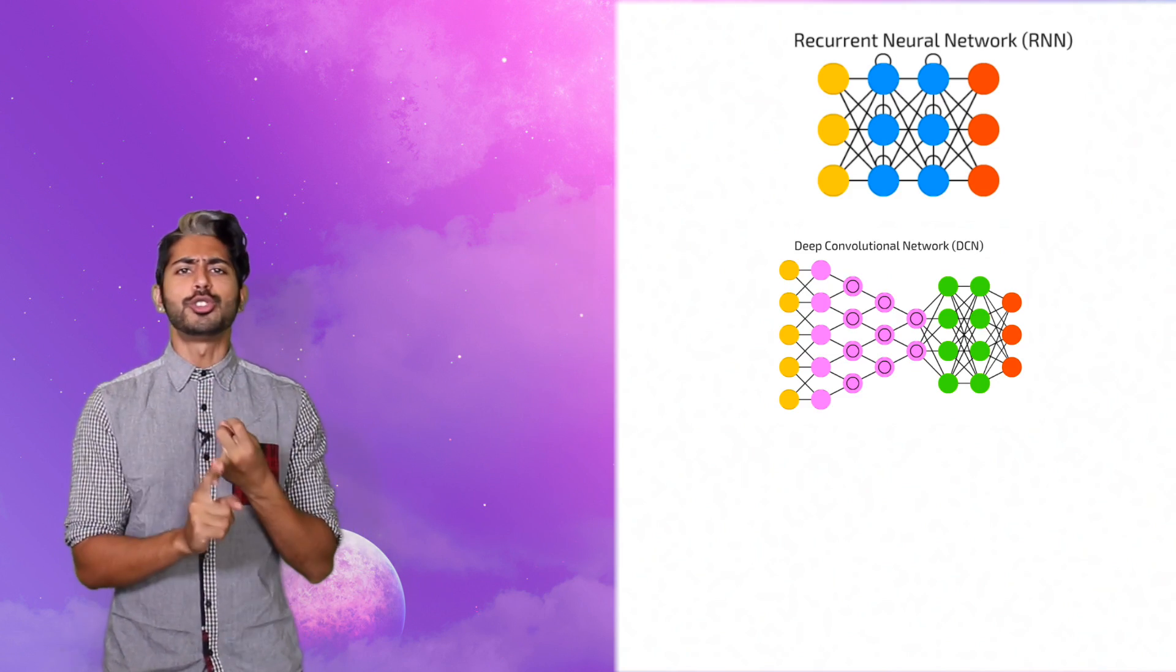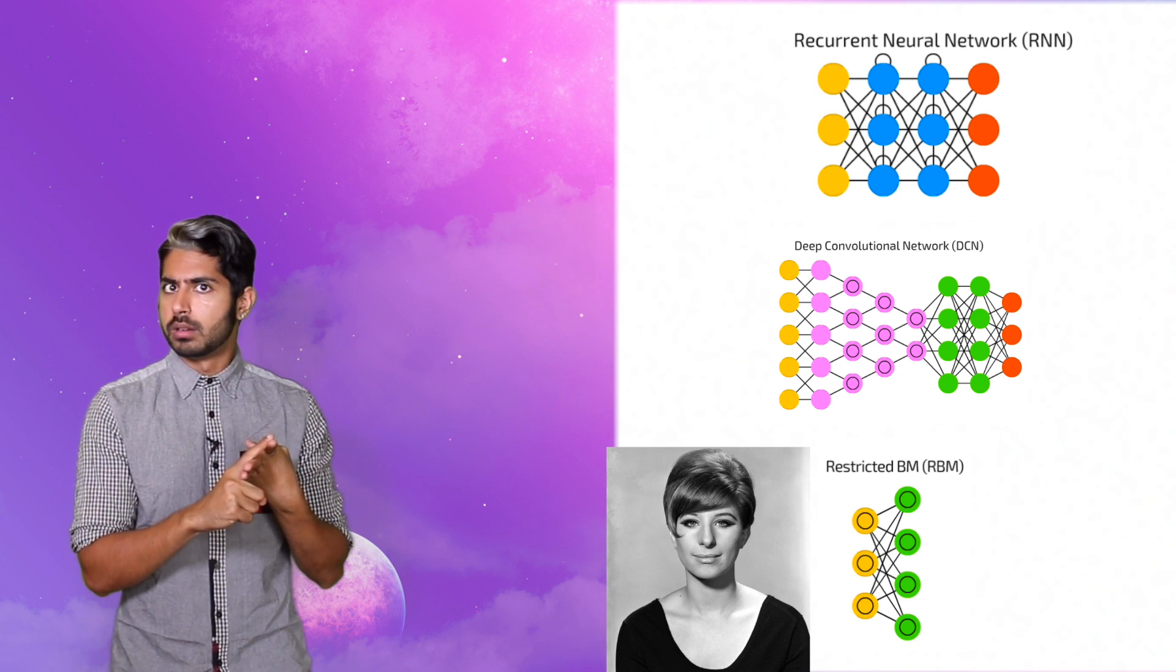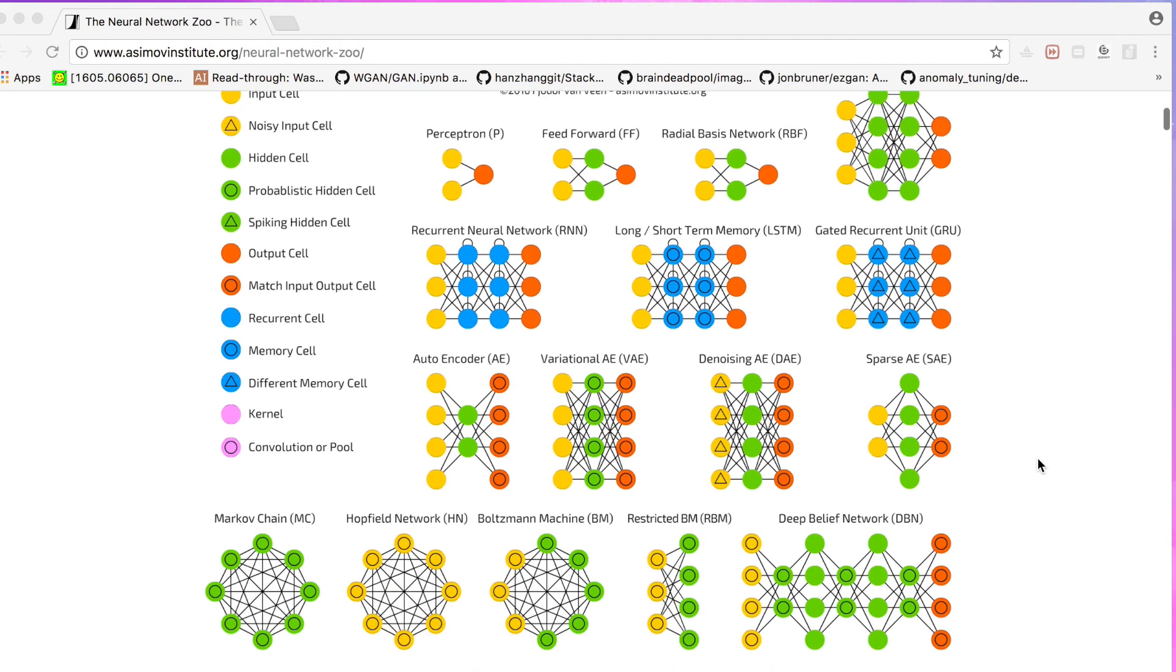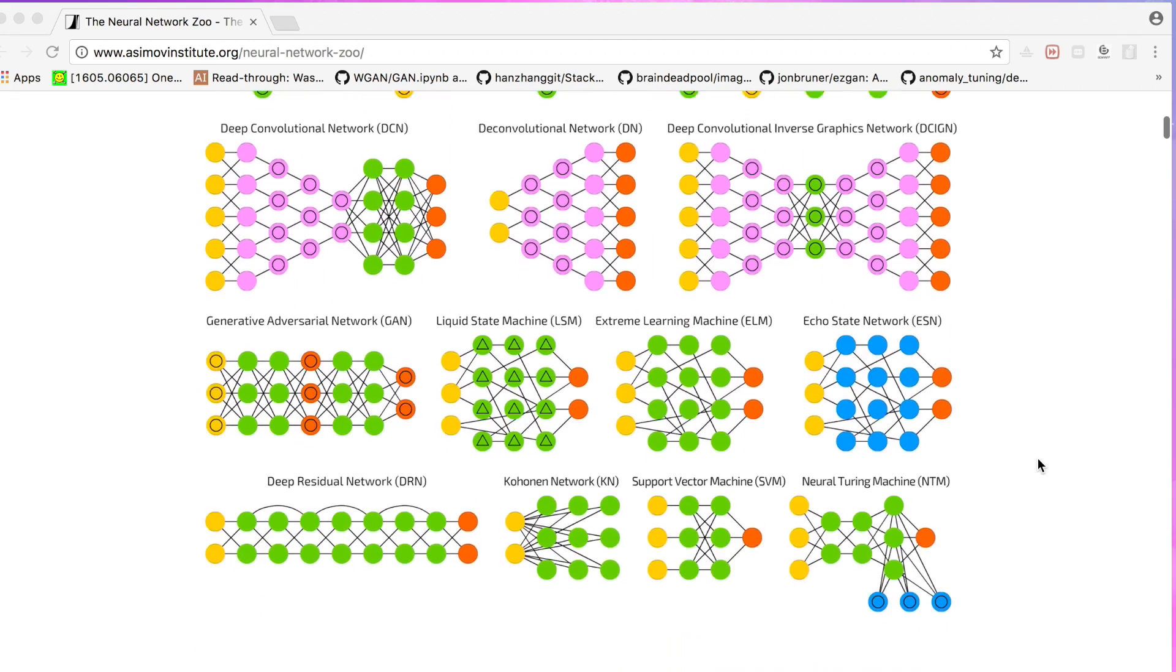Recurrent nets, convolutional nets, restricted Boltzmann machines, Barbra Streisand. These are all networks that can recognize patterns in the world, and they themselves have shared patterns.